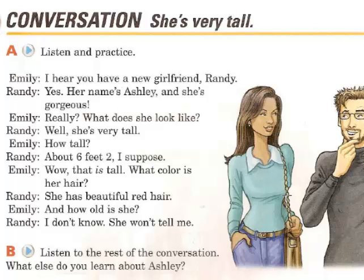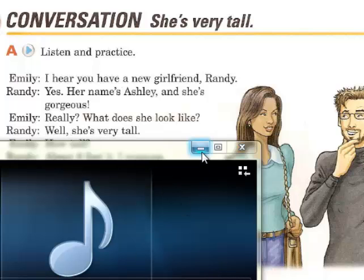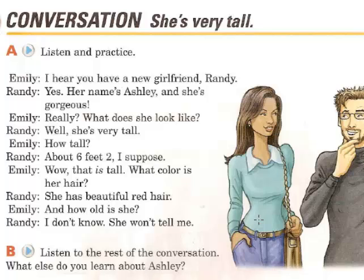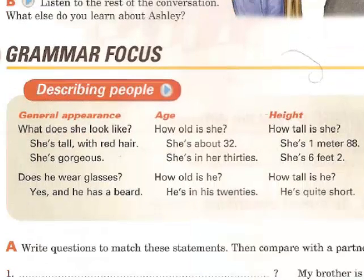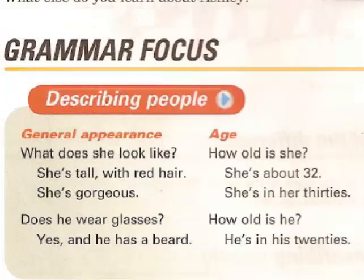Page 59, Exercise 3. Ashley is older than Randy — maybe 32, 33, I don't know. Randy is 29. Now let's listen to the grammar focus: Describing People.